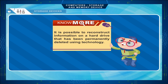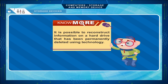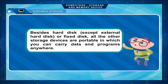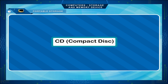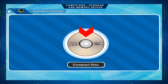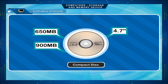It is possible to reconstruct information on a hard drive that has been permanently deleted using technology. Besides the hard disk, all other storage devices are portable, allowing you to carry data and programs anywhere. A compact disk, commonly known as a CD, is a portable optical storage device. It is a thin circular disk with a reflective metal coating and measures 4.7 inches in diameter. A CD can store 650 MB to 900 MB of data.